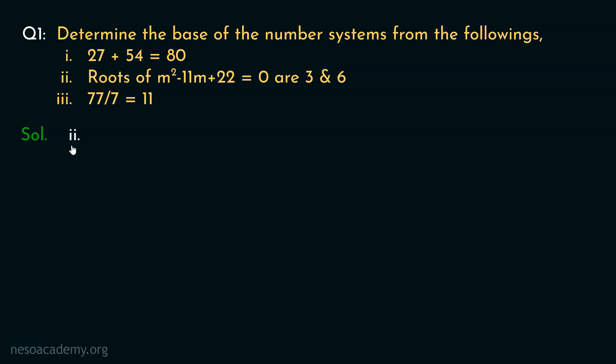So 27 plus 54 results in 80 if they are the digits of a base 11 number system. Let's now observe the second equation. Roots of M squared minus 11M plus 22 equals 0 are 3 and 6. Basically the equation and the roots are given, we will try to determine the base.